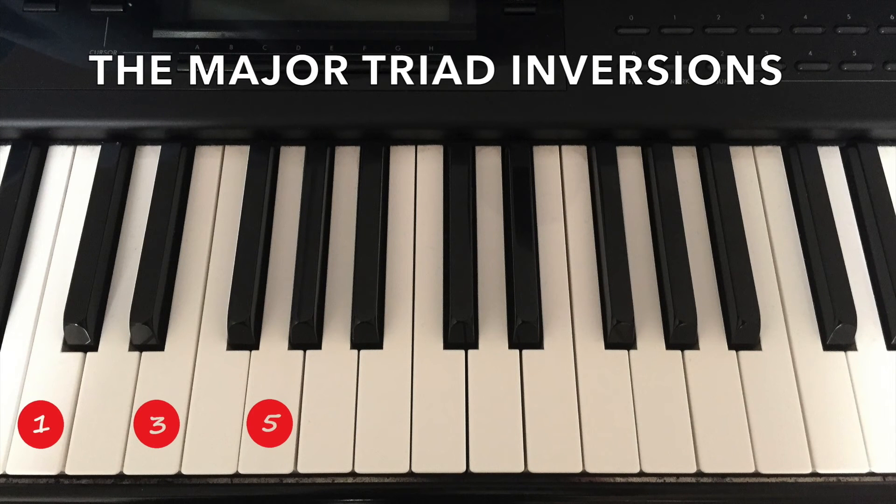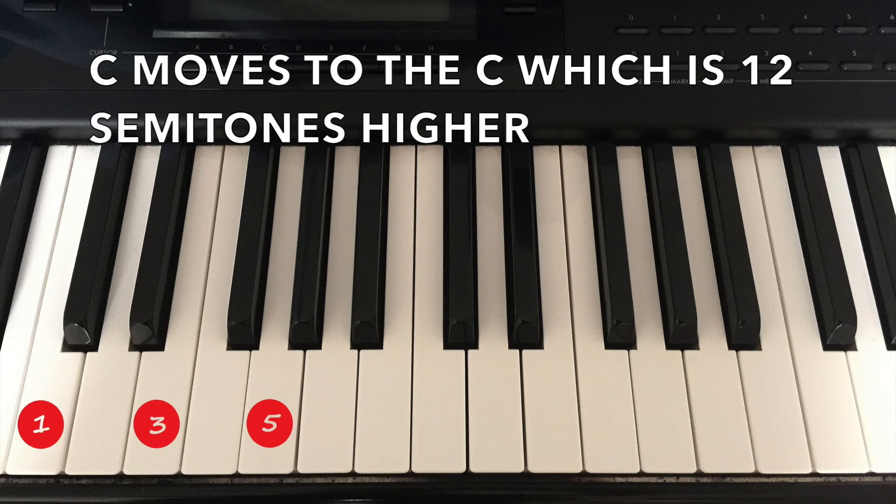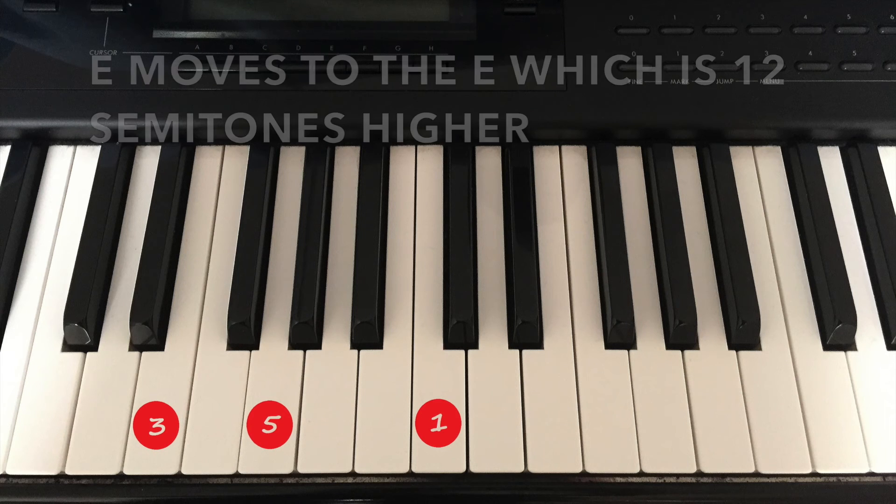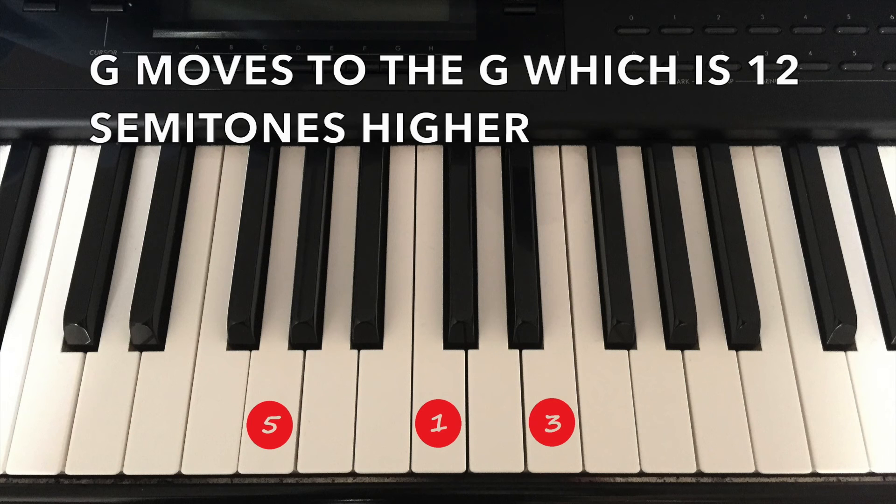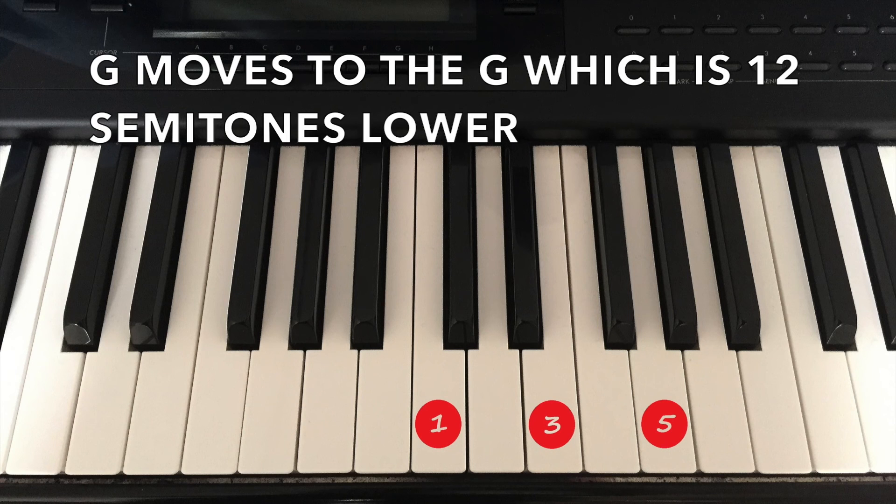Here are the numbers of one, three, and five. You take the root, put it up an octave, and you have three, five, one. You take the third, put it up an octave, and you have five, one, three. You take the fifth, put it up one octave, and you have one, three, five again. If you take the fifth down an octave, you have your five, one, three. That's a shortcut for a second inversion.